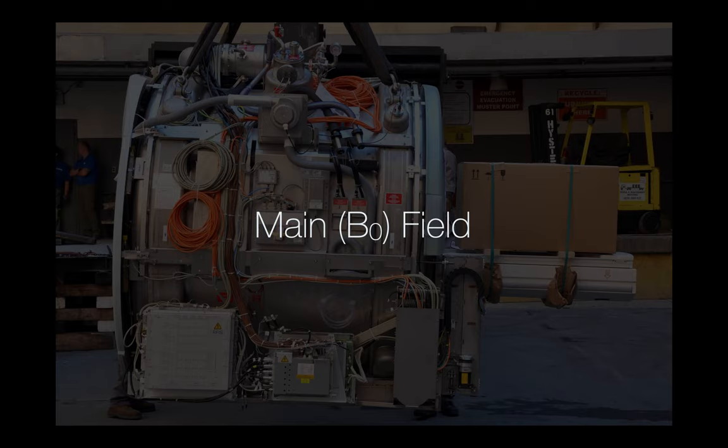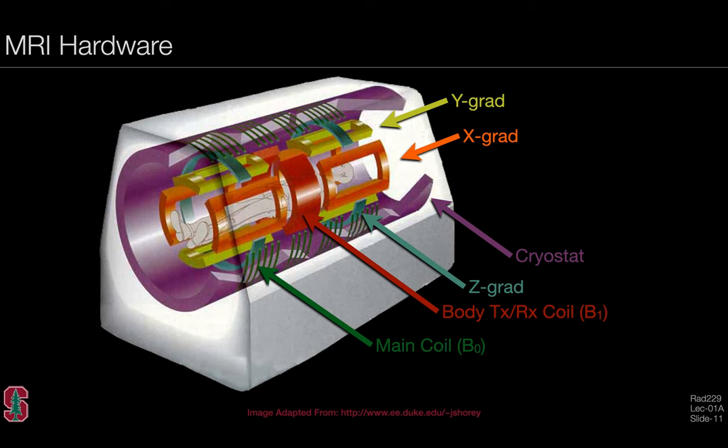Let's talk about the main B0 field. Here's a hardware diagram showing the various important hardware components for a simple MRI system. We're focused on the main B0 field—the electromagnetic windings shown in green that reside inside the cryostat, which is liquid helium cooled to keep things at superconducting temperatures. As the lectures develop, we'll also talk about the body coil, which is the B1 coil used for exciting the spins, and the X, Y, and Z gradients important for spatial localization.